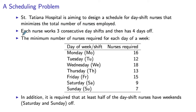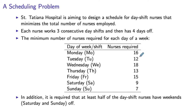Each nurse works three consecutive day shifts and then has four days off. This is a standard schedule in this hospital. So, for example, if you start your shift on Monday, then you work Monday, Tuesday, and Wednesday, and then you have Thursday, Friday, Saturday, and Sunday off. This table provides the minimum number of nurses required for each day of the week — on Monday you need at least 16 nurses, on Tuesday at least 12, and so on.